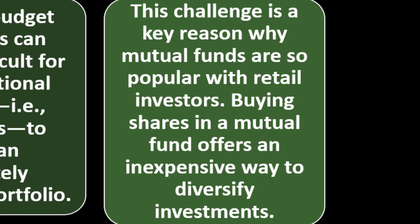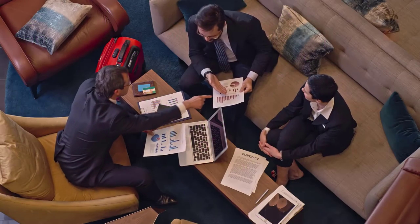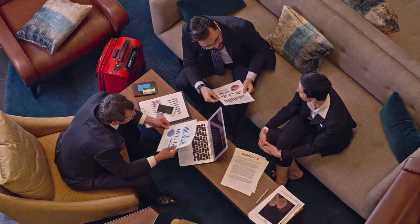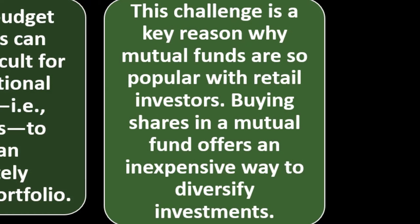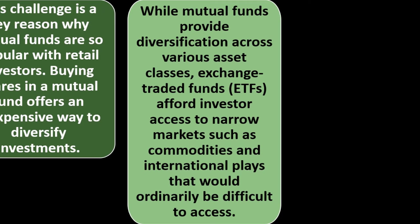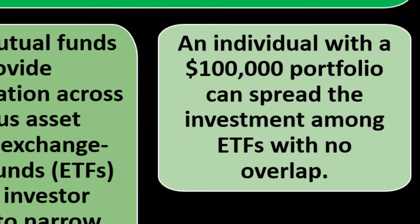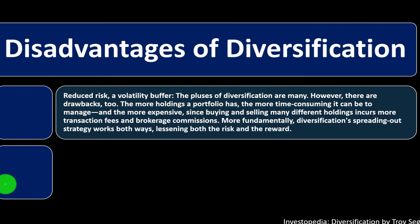Mutual funds allow us to pool money into a fund that can be used to diversify, which is a key component for most investors. Buying shares in a mutual fund offers an inexpensive way to diversify investments. While mutual funds provide diversification across various asset classes, ETFs afford investor access to narrow markets such as commodities and international plays that would ordinarily be difficult to access. An individual with a $100,000 portfolio can spread the investment among ETFs with no overlap.